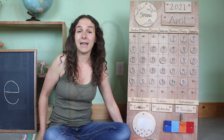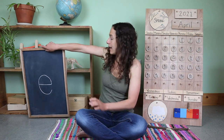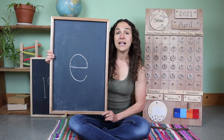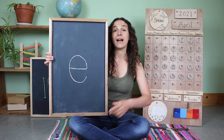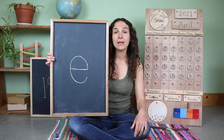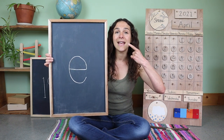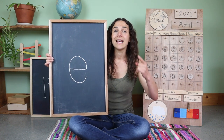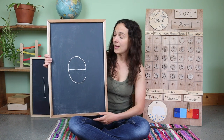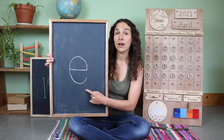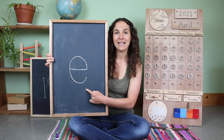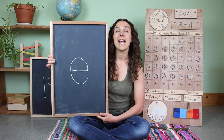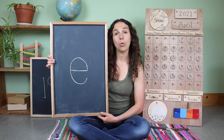Thanks for sharing the weather with me. Now let's move on to the letter, the number, and the sign of the week. This letter makes two sounds — can you make the short sound with me? Eh. And what about the long sound? E. This is a lowercase letter. Do you know what lowercase letter this is? E — that's right friends, this is a lowercase e. And E says eh or ee.